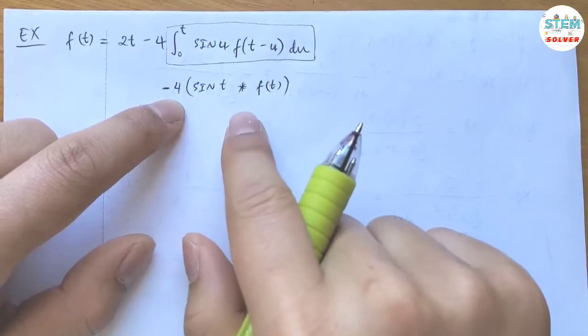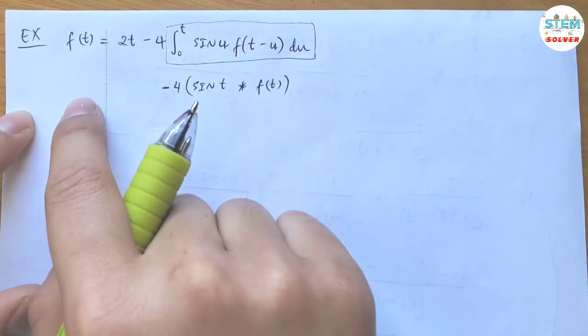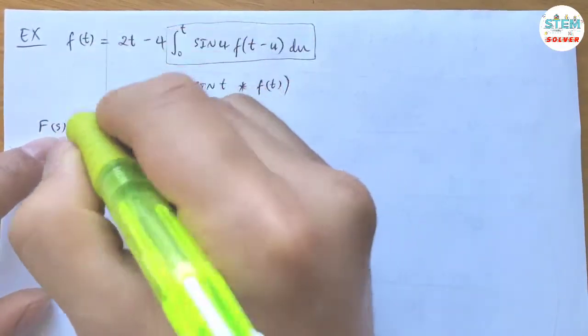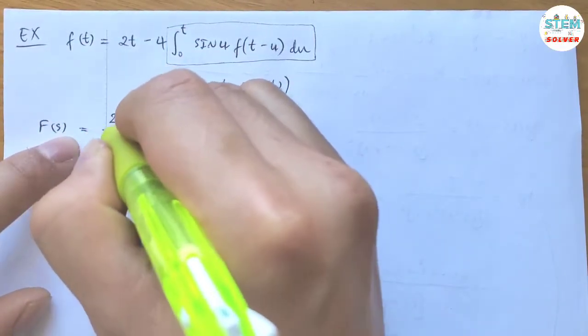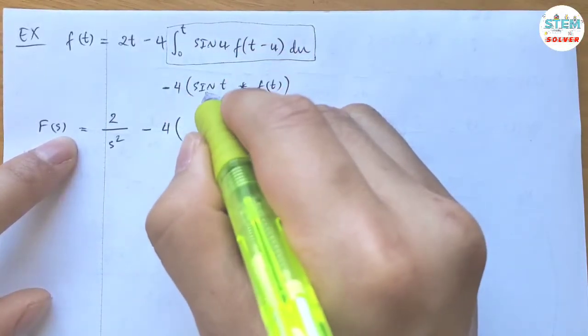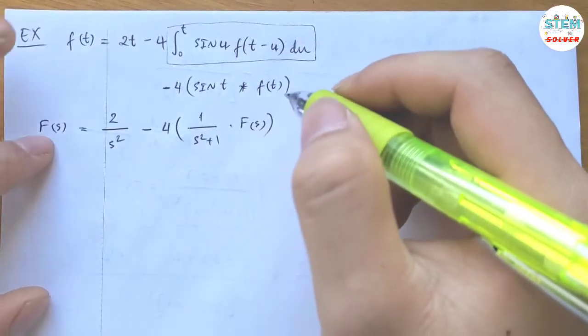Now since we have everything in terms of t, we can apply the Laplace transform on both sides. So on the left side, I have capital F(s) equals 2 over s² minus 4 times the Laplace transform. This one is 1 over s² plus 1 times capital F(s).